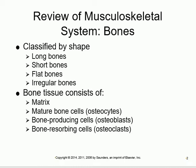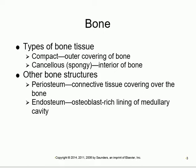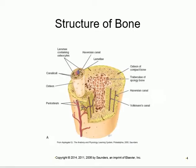Bone can be compact or cancellous, which is called spongy bone. If you take a cross-section of any bone, the outside is compact and the inside has spaces like a sponge. The outer surface of the bone is called the periosteum and the inner surface is called the endosteum.